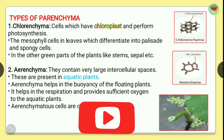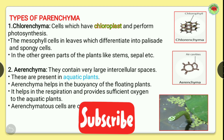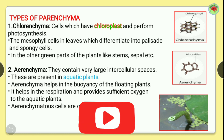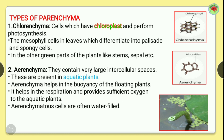Mesophyll cells are present only in the leaves and are differentiated into two types: palisade and spongy, which we will discuss later. In the other green parts of the plant, like stems and sepals, you can also find chlorenchyma. Chlorophyll is present in chlorenchyma, which helps in the function of photosynthesis.